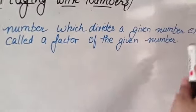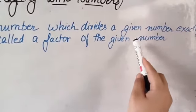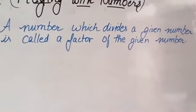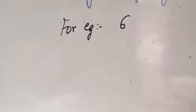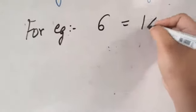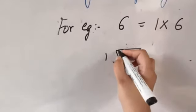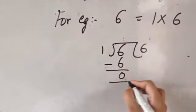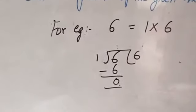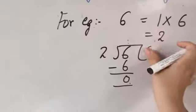For example, 6. What are the factors of 6? 1 times 6 is 6. This means 1 divides 6 exactly. When you divide 6 by 1, the quotient is 6 and the remainder is 0. So 1 is a factor. After that, 2 times 3 is 6. When you divide 6 by 2, the remainder is 0. So 2 is a factor.